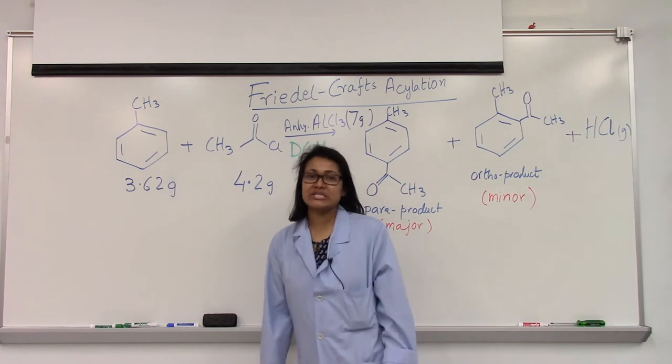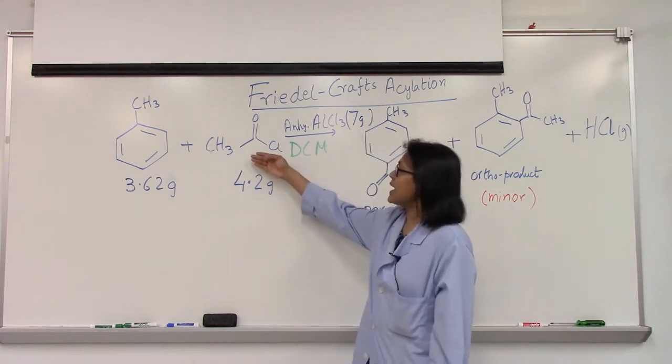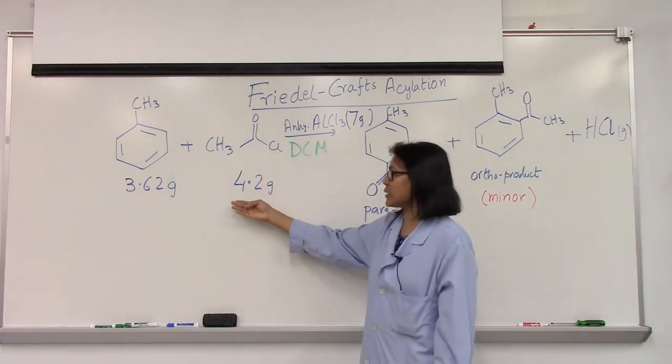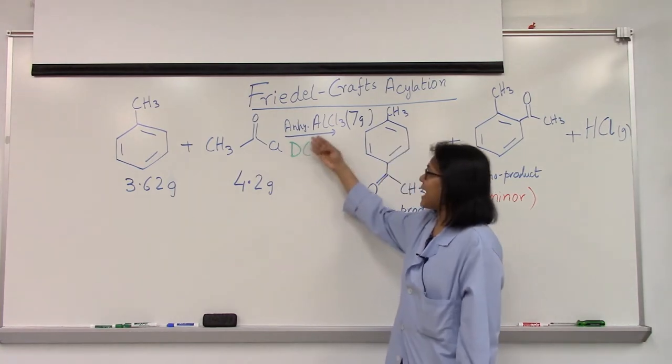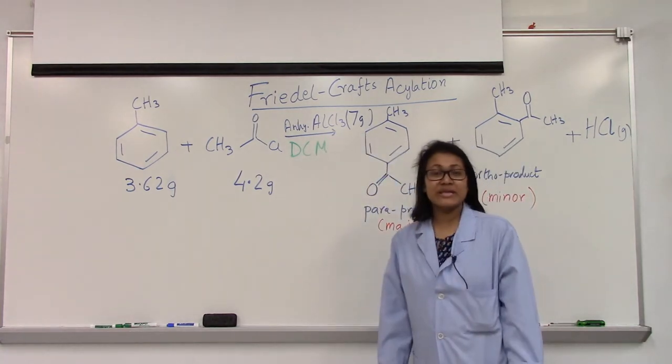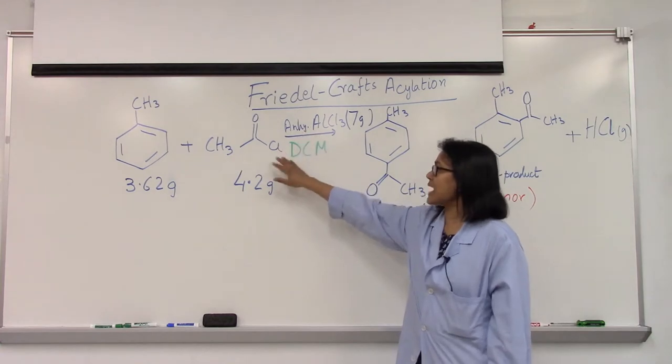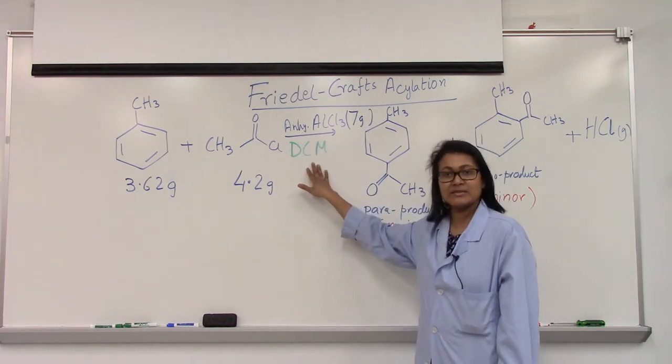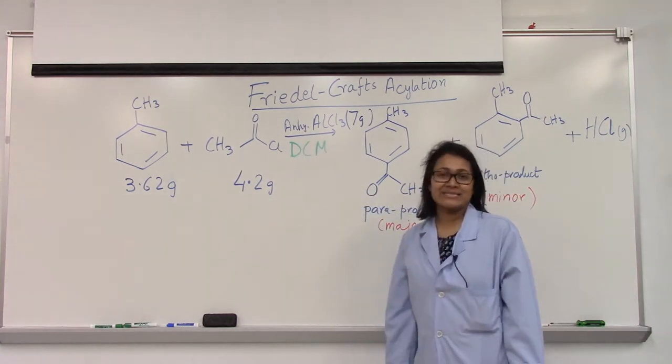The first step of the reaction is to combine acetyl chloride, which I weighed 4.2 grams, and anhydrous aluminum chloride, which is about 7 grams. These two combine in presence of dichloromethane as your solvent to form the acetyl cation.